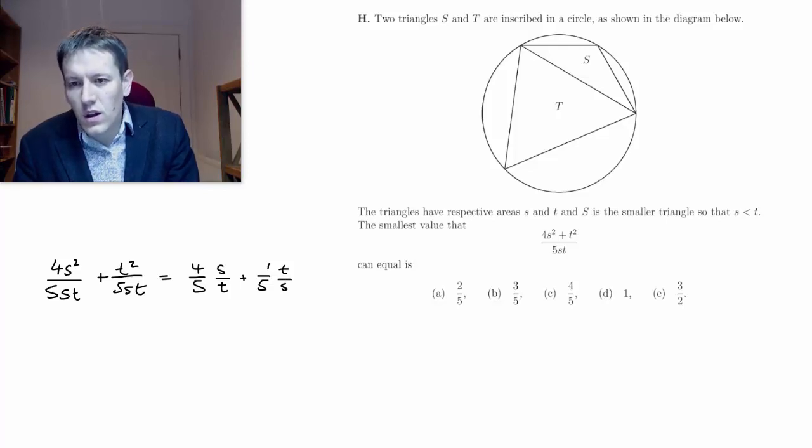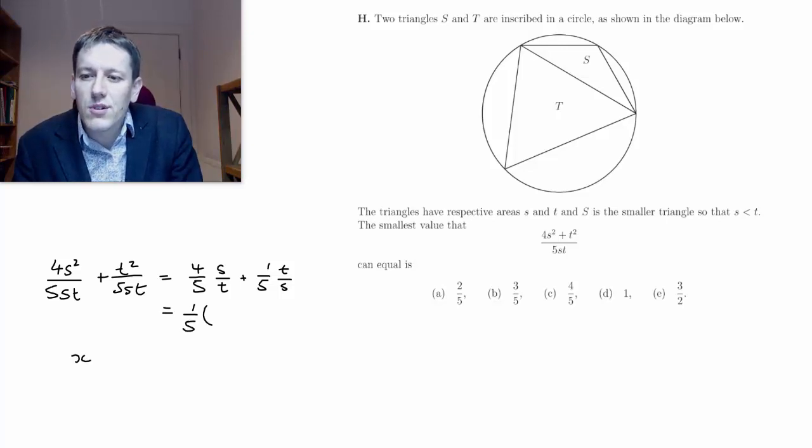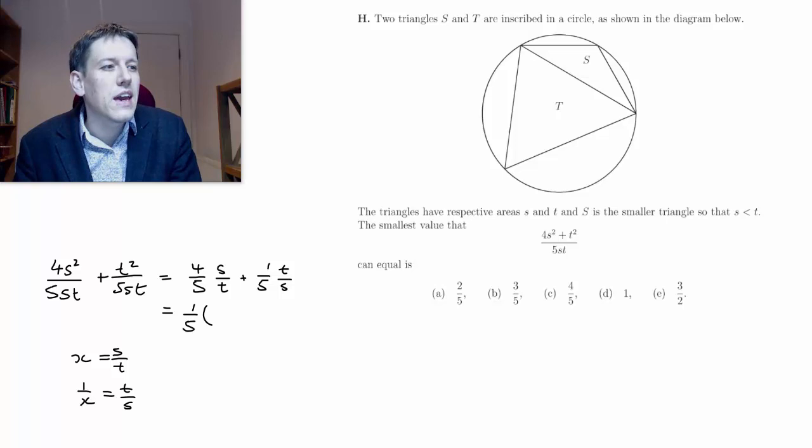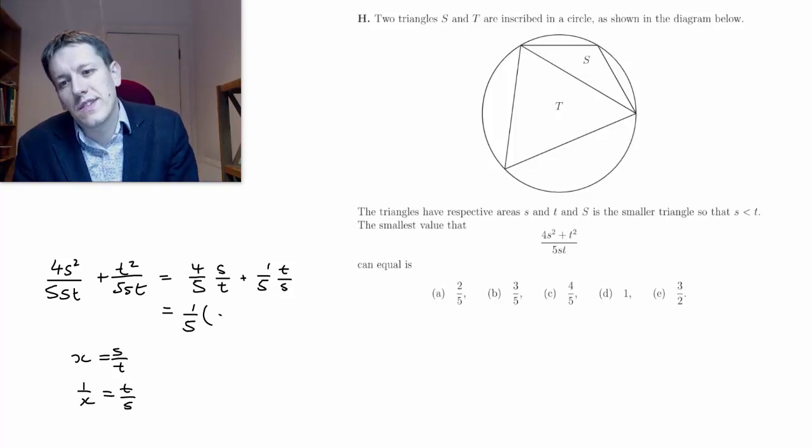We've got a 1 fifth everywhere. And let's say I wrote x equals s over t, then 1 over x would be t over s. So I could write this expression in terms of this ratio between the smaller and the larger triangle. So I've got 1 fifth times 4x plus 1 over x.